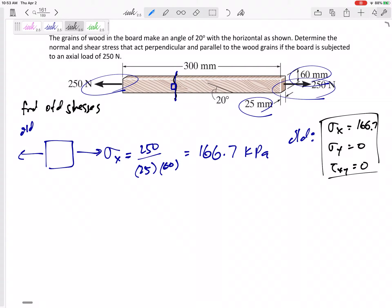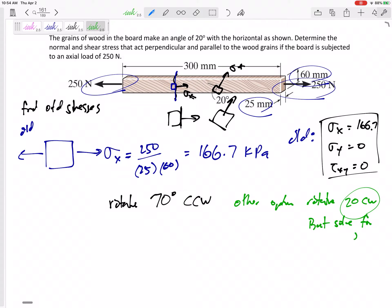Now, what are the new stresses? The old sigma X was right here, but I want to know the new sigma X. I didn't really rotate it 20 degrees - I rotated from here. So this face was pointed out right here, and now this face is pointed out right here. I just rotated it 70 degrees counterclockwise. I rotated it 70 degrees counterclockwise.